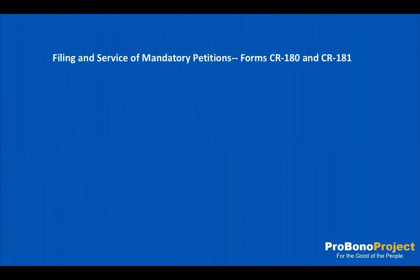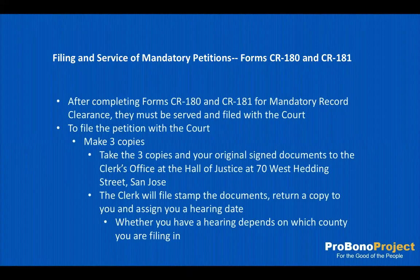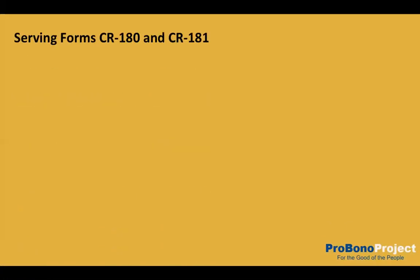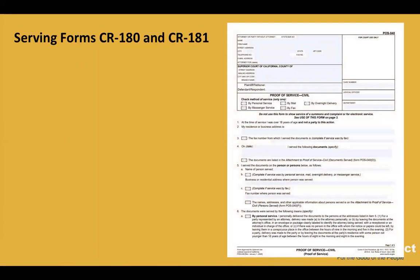After the forms are completed, you will need to file and serve the mandatory record clearance forms CR180 and CR181. To file the petition with the court, make three copies. Take the copies with your original document to the clerk's office of your local criminal courthouse in the county where you are filing. The clerk will file stamp the documents, return a copy to you, and assign you a hearing date. Serving the forms means copies of the petitions must be given to both the district attorney's office and the local probation department. You will need two separate proofs of service, Form POS-040: one for the probation department and one for the district attorney.